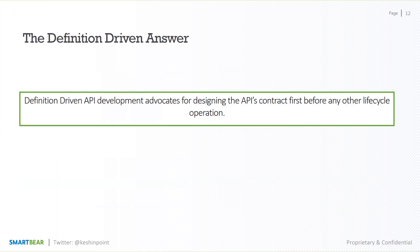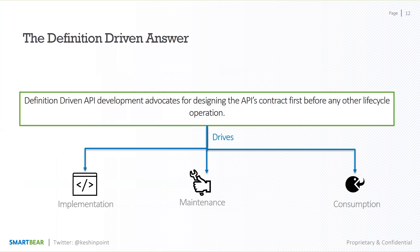This is why the definition-driven approach is so important. The definition-driven API development approach is essentially putting the API's definition — or the contract — first, before any other part of the API lifecycle is started. We use this definition, which we created, to accelerate every single part of the API lifecycle. Just having this one primary element in place — the definition, the contract — actually drives the implementation of the API, and it makes implementation much easier once the definition is in place.